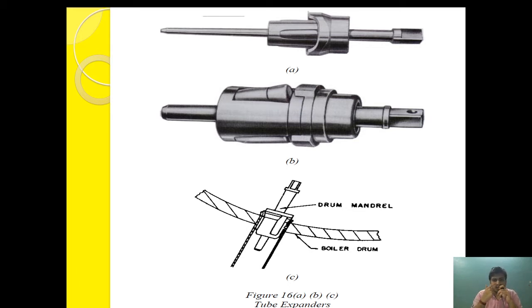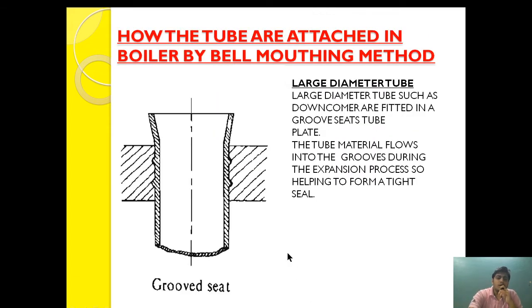As you can see in this diagram, these are the tools used for bell mouthing. First, a mandrel is inserted into the end of the tube, and after that it is opened up. This opening up causes the expansion or bell mouthing of the tube, preventing it from coming out while remaining in service.